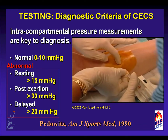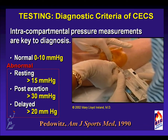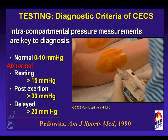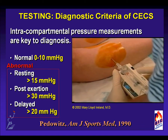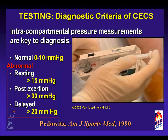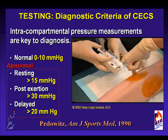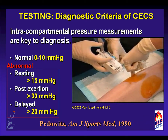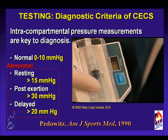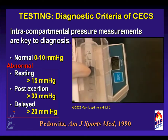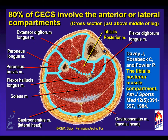Intracompartmental pressure testing is done with a Stryker monitor. After prepping the skin with betadine, the needle is placed through the skin into the anterior and lateral compartment and then posteromedially into the posterior compartment. The skin can be anesthetized with topical spray such as ethyl chloride or an injection of lidocaine. All four compartments should be routinely measured in both legs before and after exercise. Normal pressures are up to 10 mmHg. Abnormal pressures include resting pressures greater than 15, post-exertion pressures greater than 30, and delayed pressures greater than 20. The four compartments are anterior, lateral, superficial, and deep posterior. A fifth separate compartment for the posterior tibialis has been described; although CECS is rare in this fifth compartment, consider involvement if pain is deep posterior and not improving despite treatment.